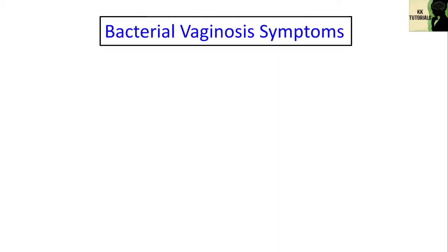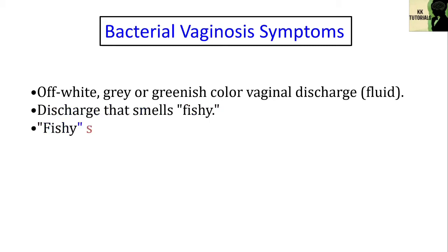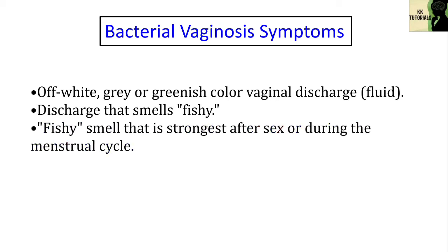Now let's see the symptoms of bacterial vaginosis. Up to 84% of people with bacterial vaginosis don't have symptoms. If you do, you may have off-white, grey, or greenish coloured vaginal discharge; discharge that smells fishy; a fishy smell that is strongest after sex or during the menstrual cycle; and rarely, an itchy or sore vagina. BV symptoms are similar to other infections, so it's important to visit your healthcare provider to determine if what you have is BV or another vaginal infection.